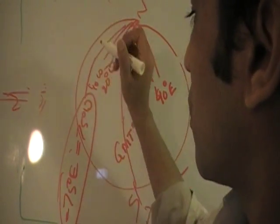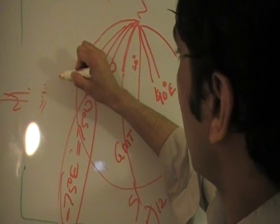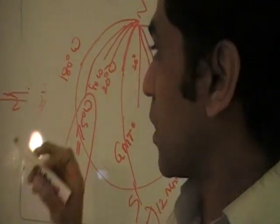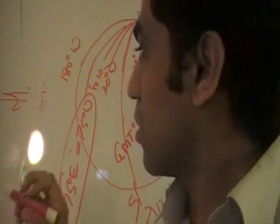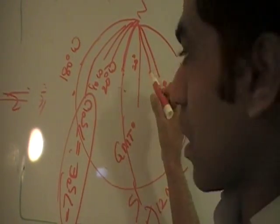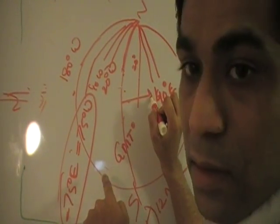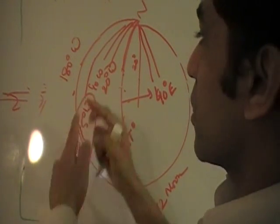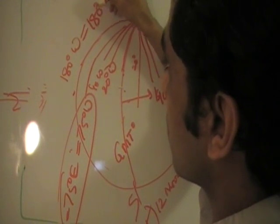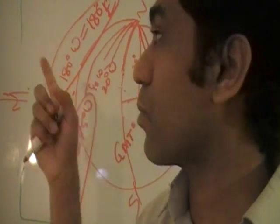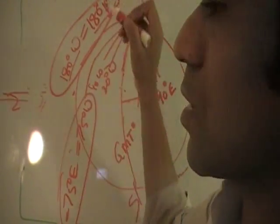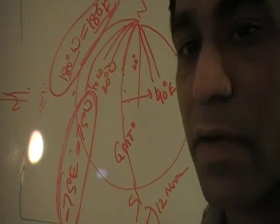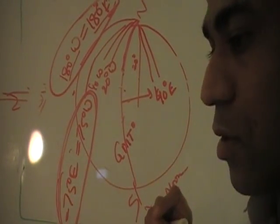That is the whole idea, until you reach 180 degrees west. When you reach 180 degrees west from here, traveling leftwise is also 180 degrees east. So when you travel 180 degrees in either direction, you ultimately reach the same point. 180 degrees west is nothing but 180 degrees east. For any value lower than that, the absolute value has to be the same for both. This is all about longitudinal lines.